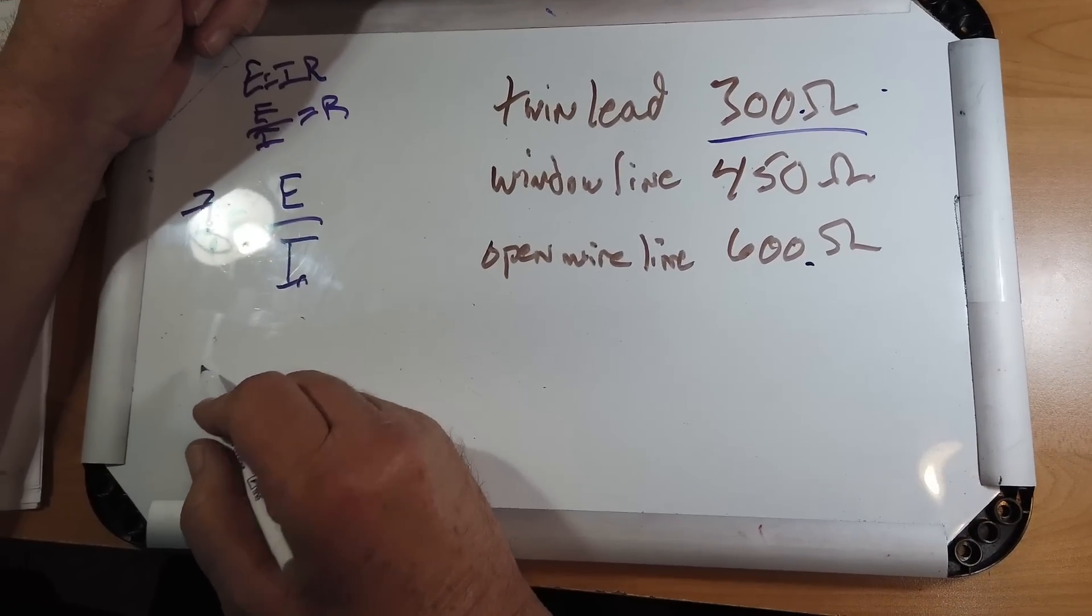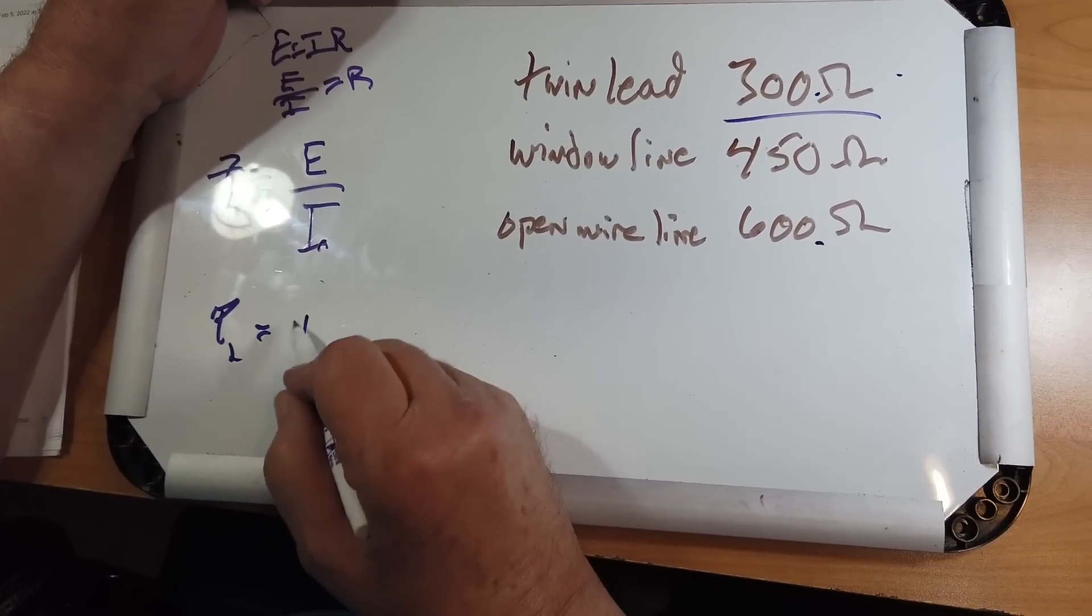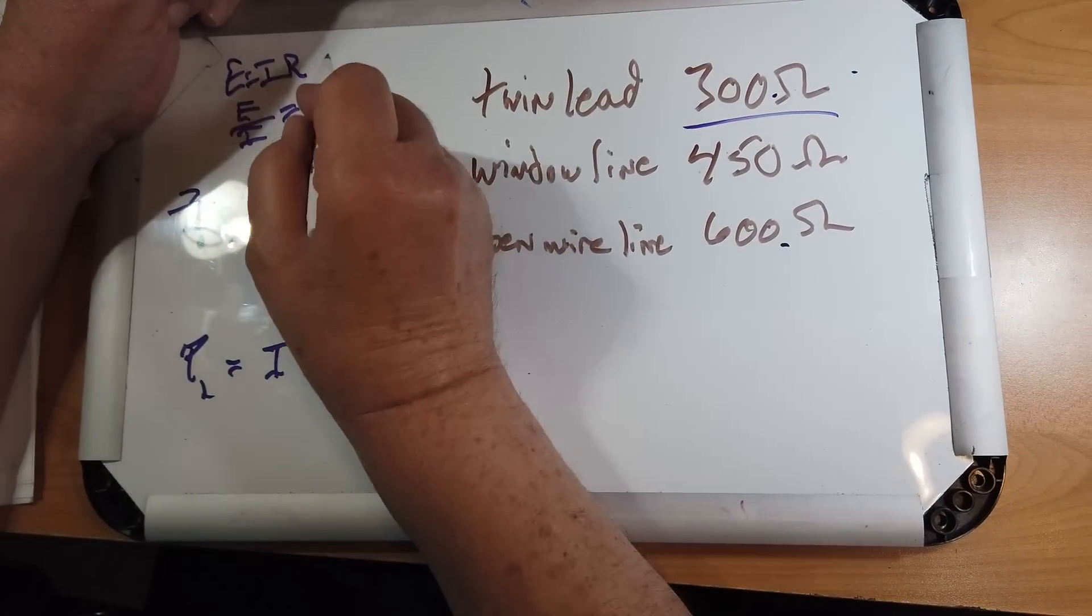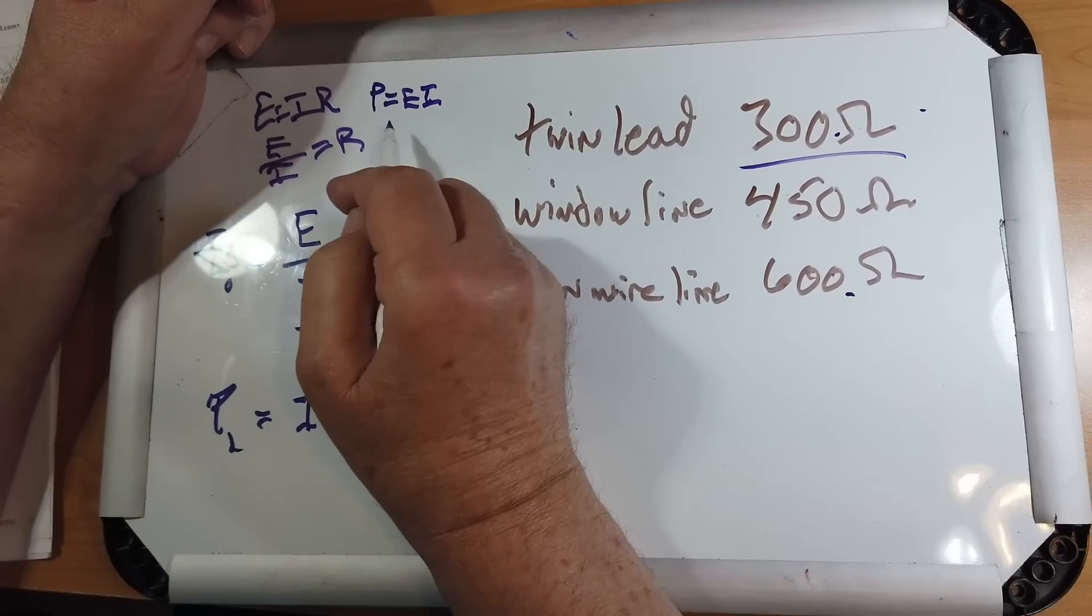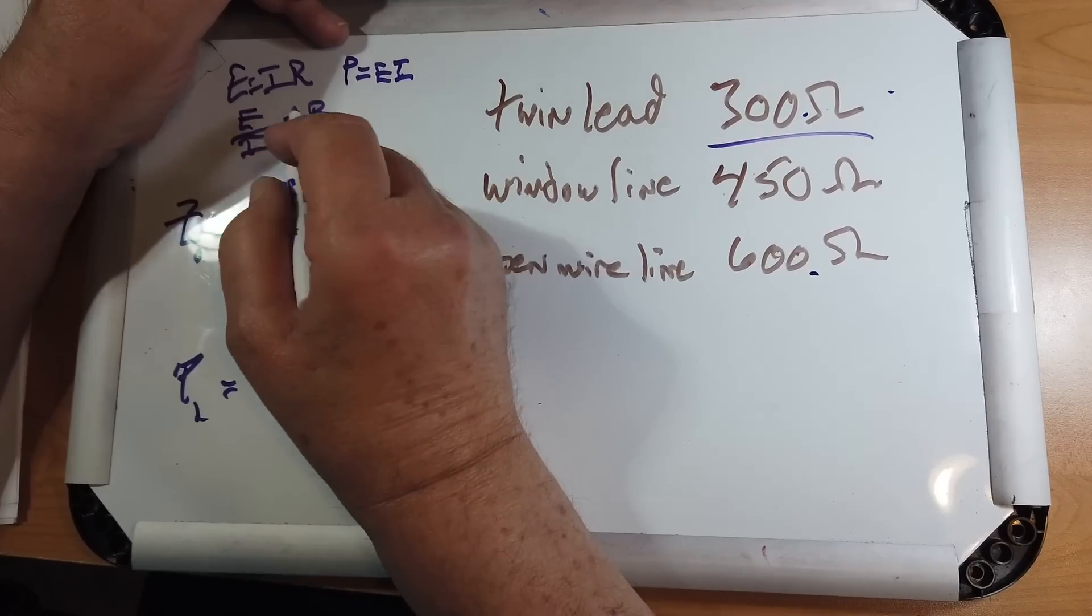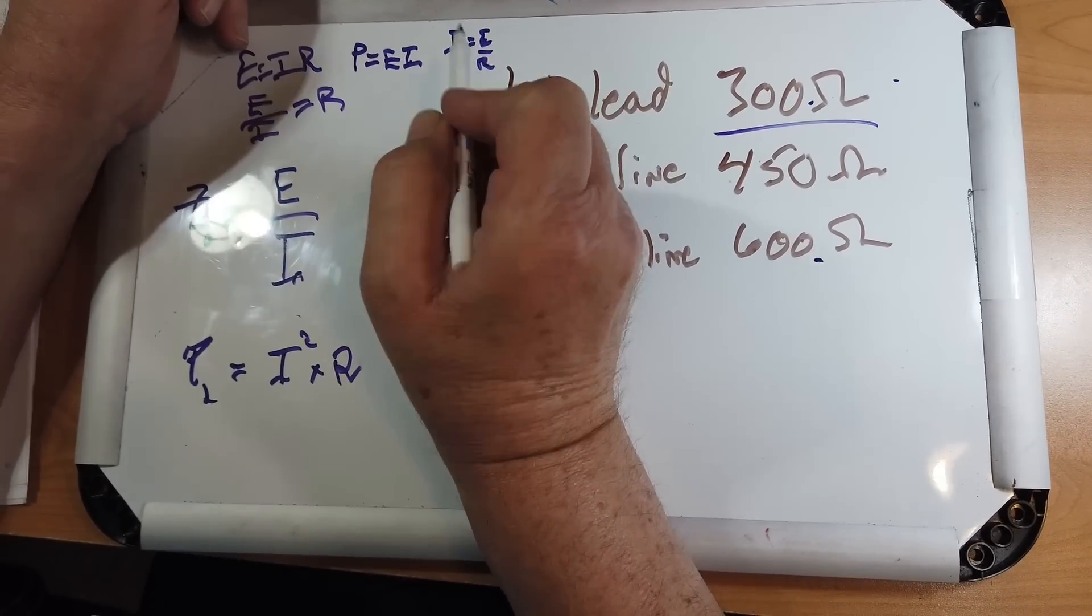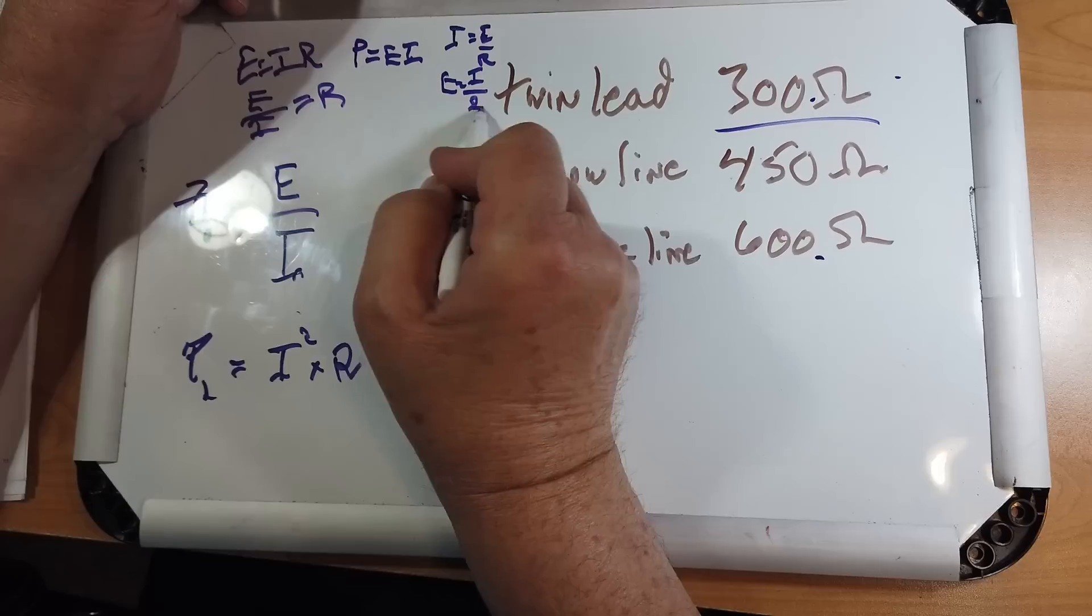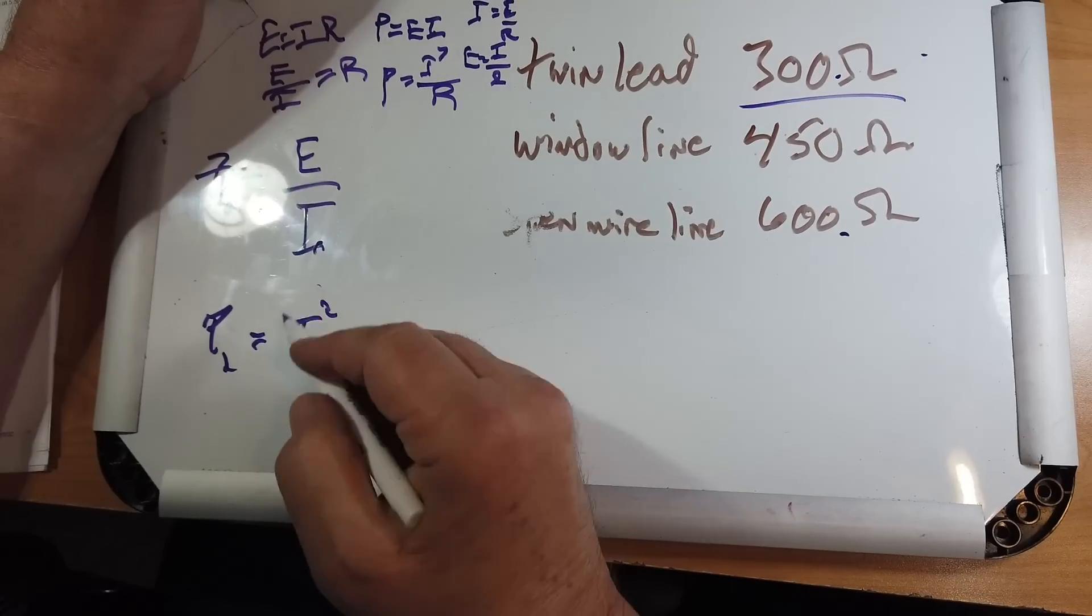Now, the power loss in the transmission line - the power that is lost due to resistive loading - is I squared times R. Power equals EI. You can always go back to basics. And we can substitute: I equals E over R. So this would be P equals I squared over R.